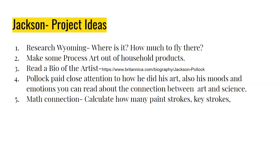Here are some project ideas for Jackson Pollock. You can research Wyoming, the state where he was born — where is it located and how much does it cost to fly there? You can make process art out of household products. You can read a biography of Jackson Pollock using the website provided. For science, Jackson Pollock paid close attention to how he did his art, his moods, and his emotions — so you can read about the connection between art, science, and how your mood influences your creative process. Finally, there's a math connection: you can calculate exactly how many paint strokes, keystrokes, or drawings you make, and turn that into math questions and math problems.